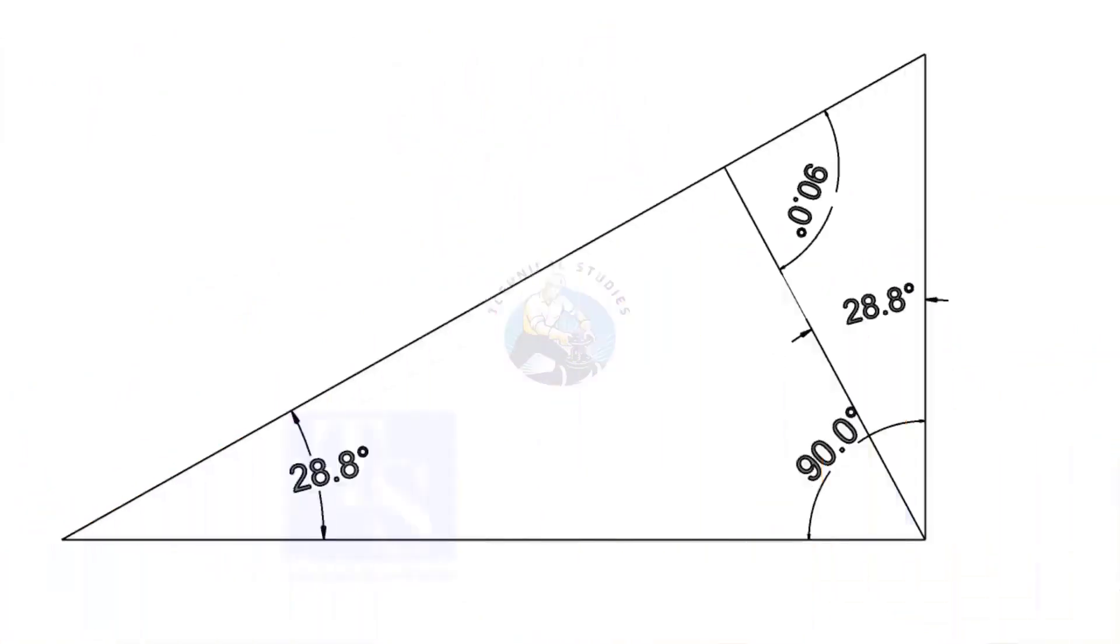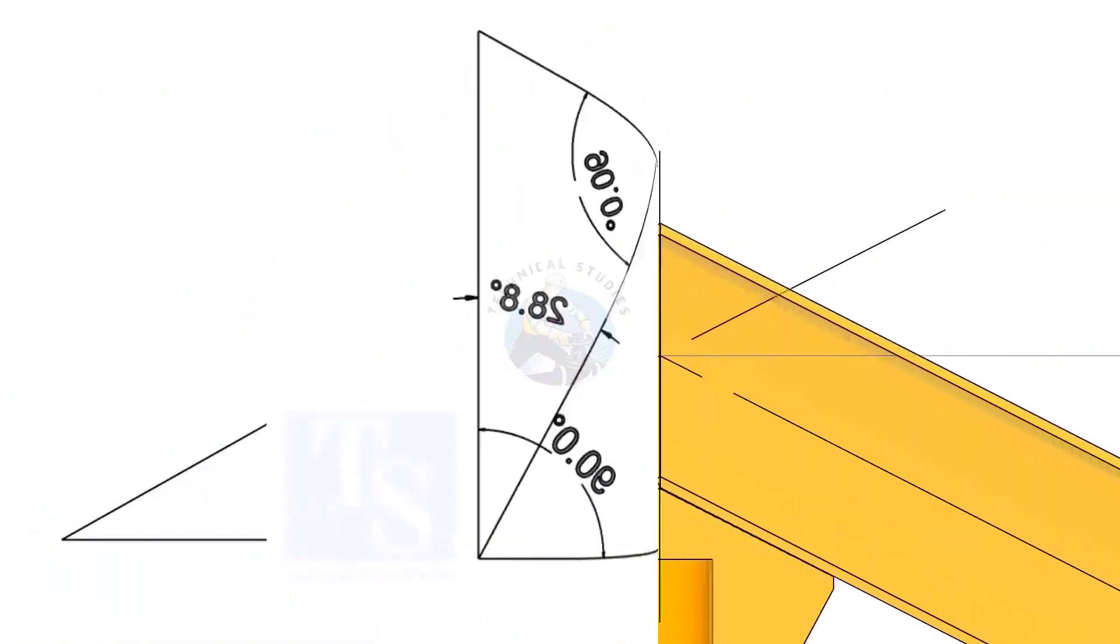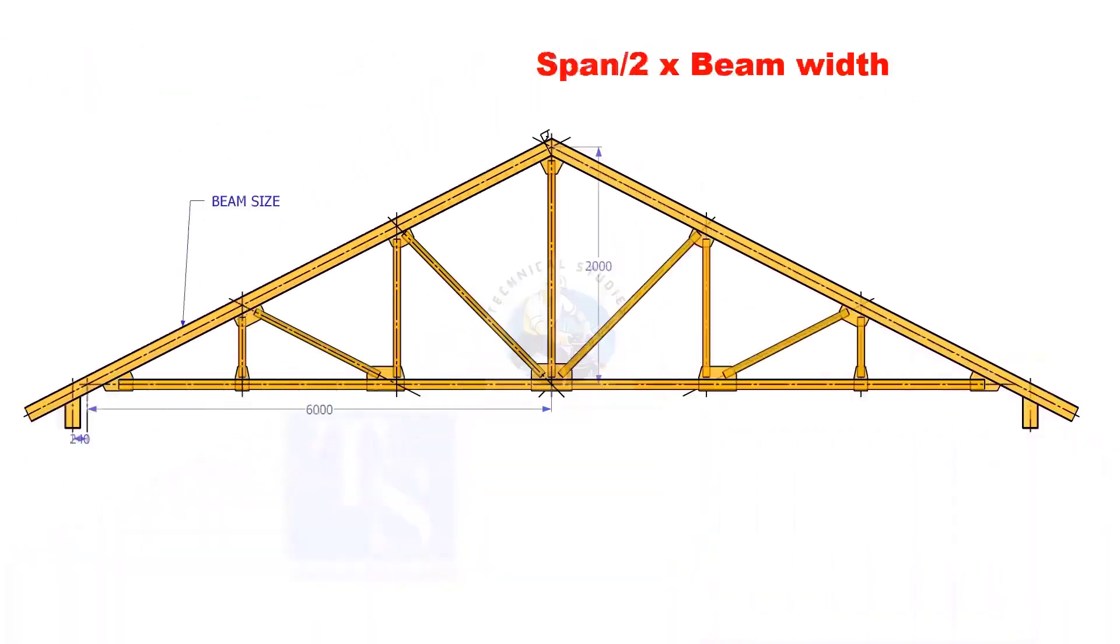Basically, the formula is based on the theory that opposite angles are equal. Here, the cutback is truss height divided by half span multiplied by the actual width of the girder.